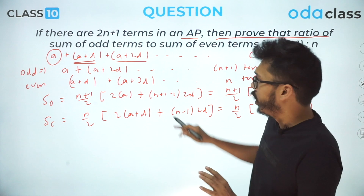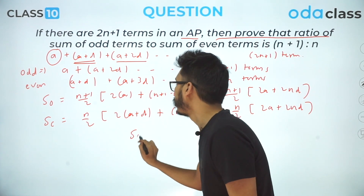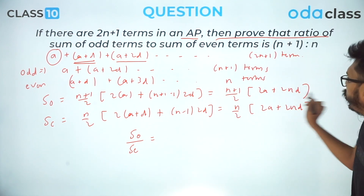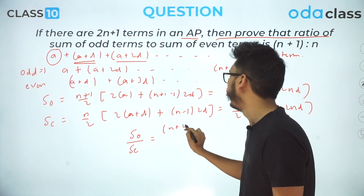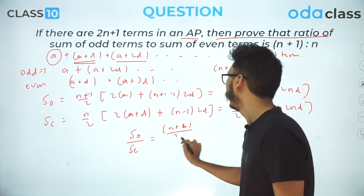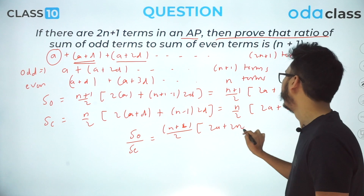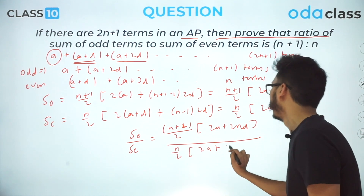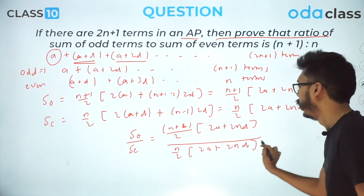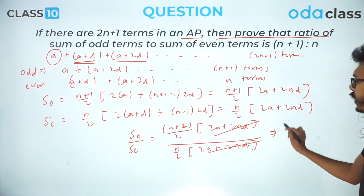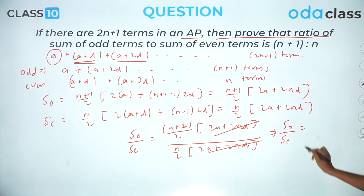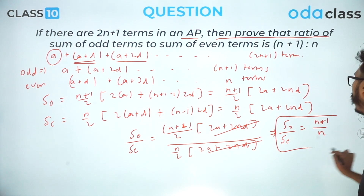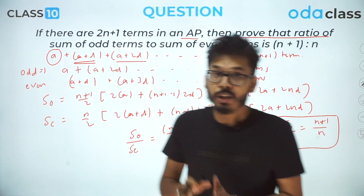Taking the ratio So/Se: the factor (2a + 2nd) cancels from numerator and denominator, giving So/Se = [(n+1)/2] / [n/2] = (n+1)/n. This is exactly what we needed to prove — the ratio of sum of odd terms to sum of even terms is (n+1)/n.